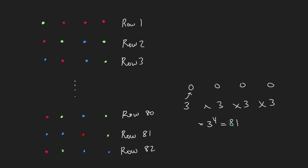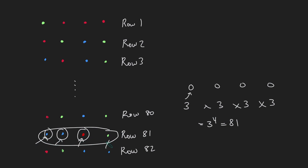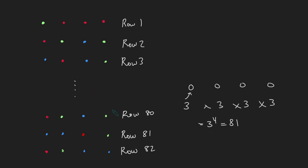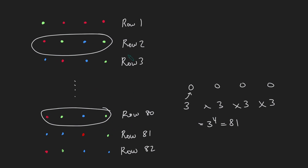Since there are 81 possible row colourings and we have 82 rows, by the pigeonhole principle there must be at least two rows with the exact same colouring. In this example, row 2 and row 80 have the same colouring.